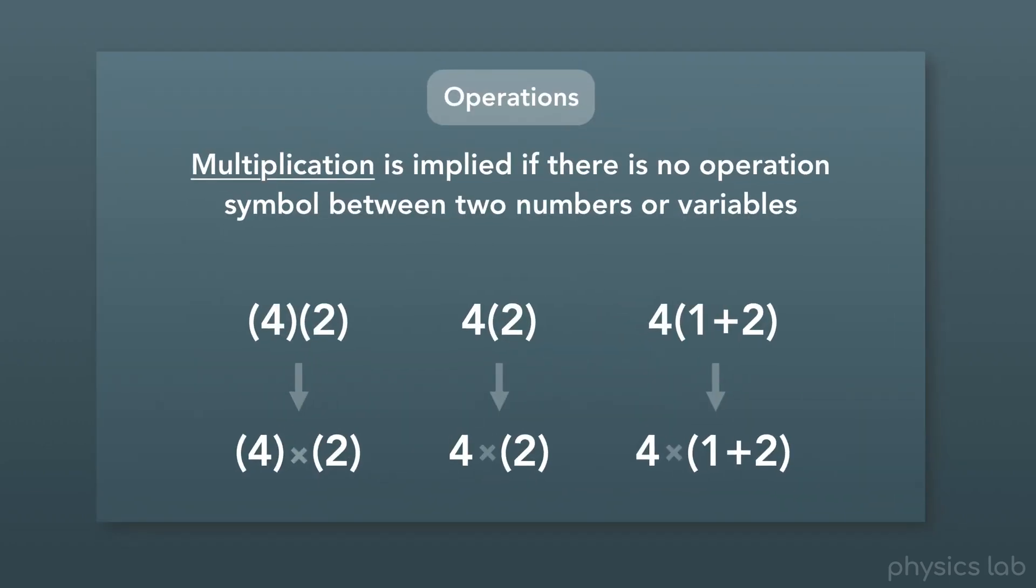We learned in another video that when two things are next to each other, with no mathematical operation symbol between them, and one is in parentheses, that means to multiply them together.